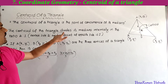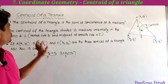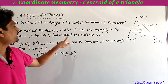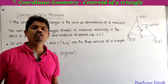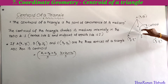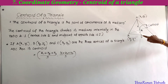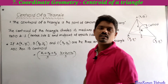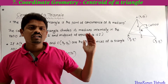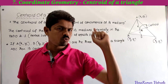The centroid of a triangle divides its medians internally in the ratio 2 : 1 — the vertex side is 2 units and the midpoint of the opposite side is 1 unit. Here, centroid G divides the median AD in the ratio 2 : 1, where 2 units is the vertex side and 1 unit is the midpoint of the opposite side.